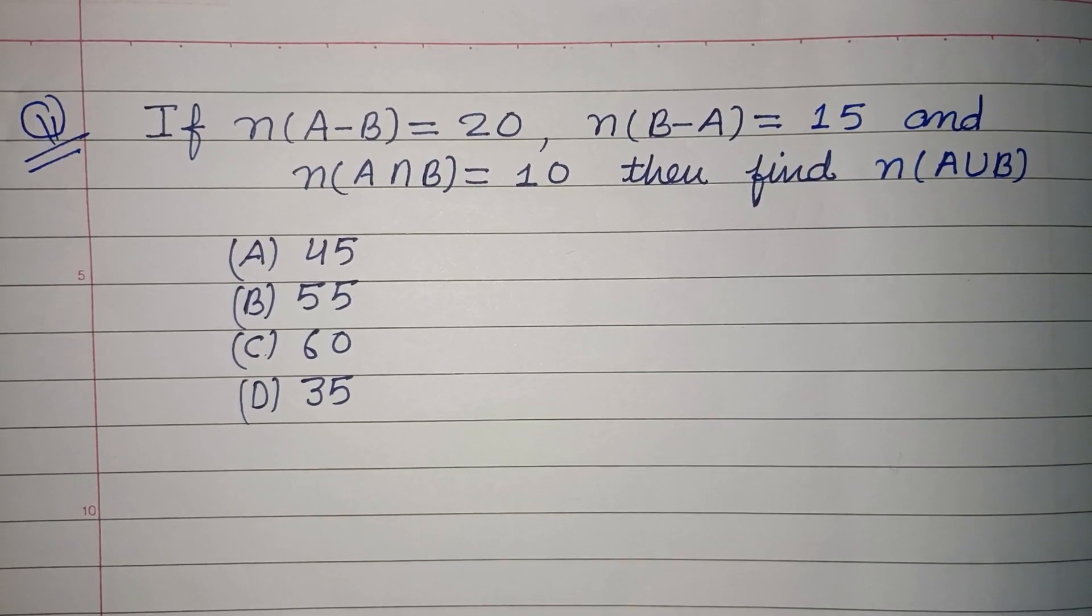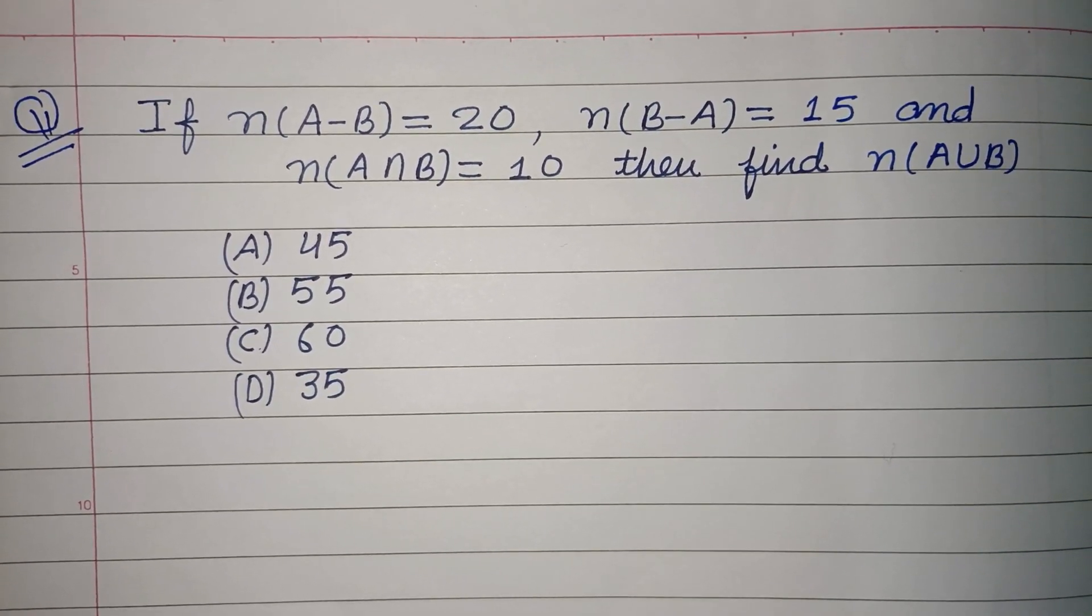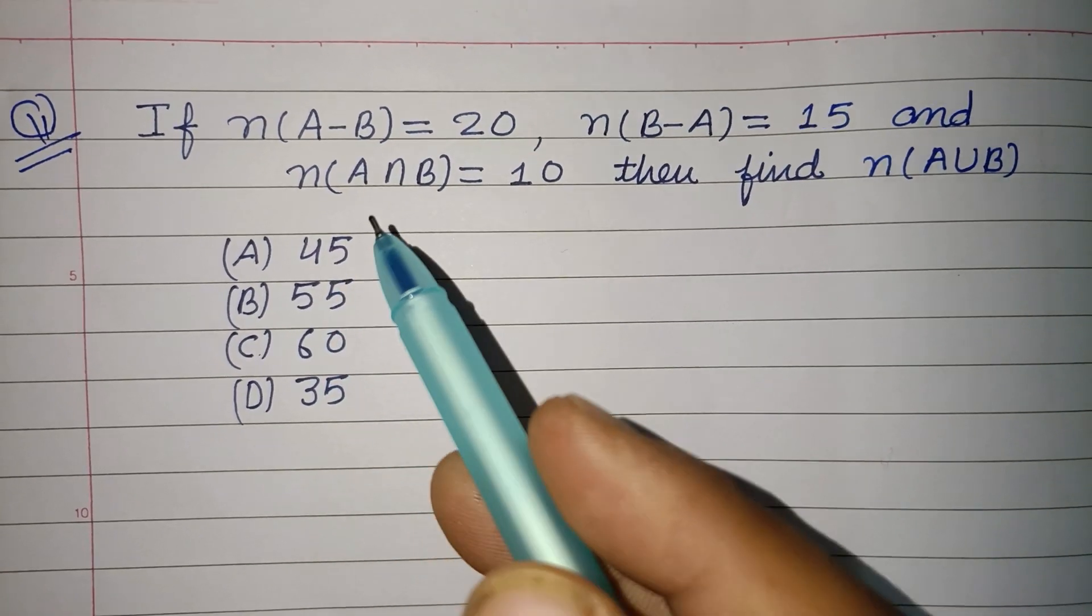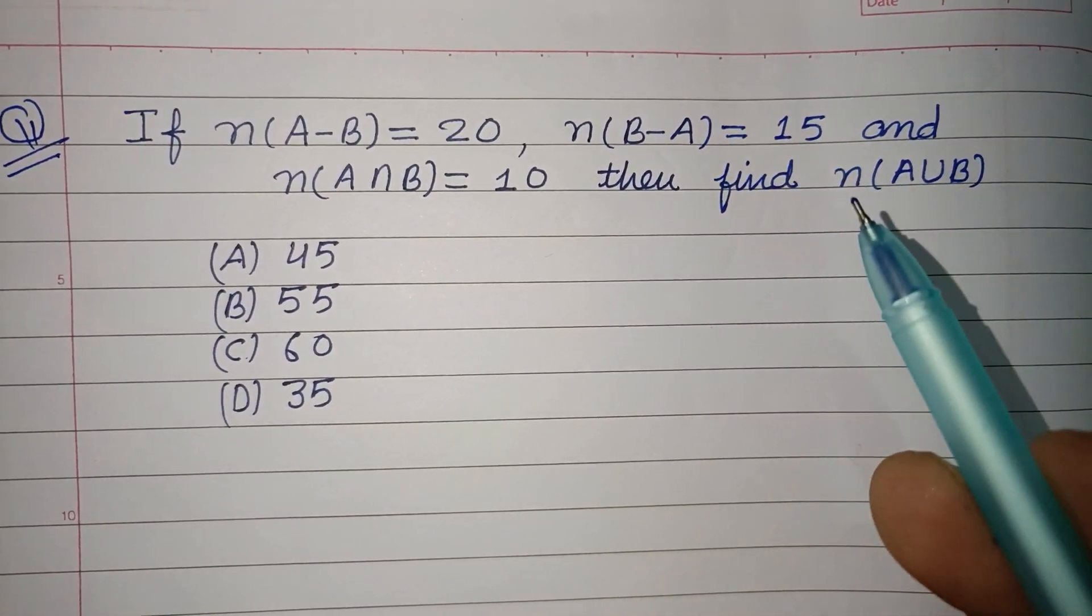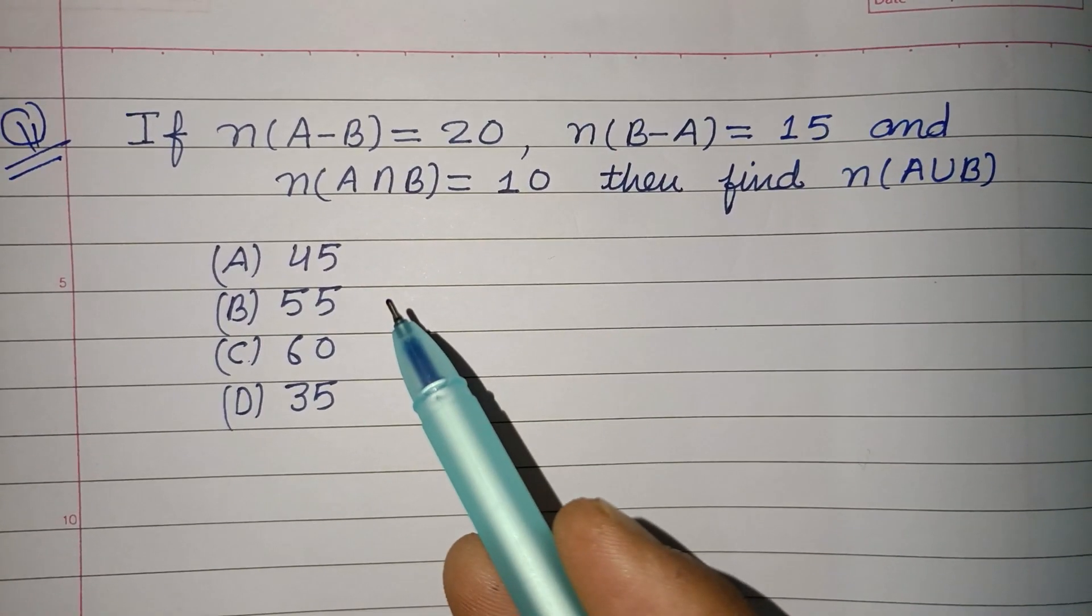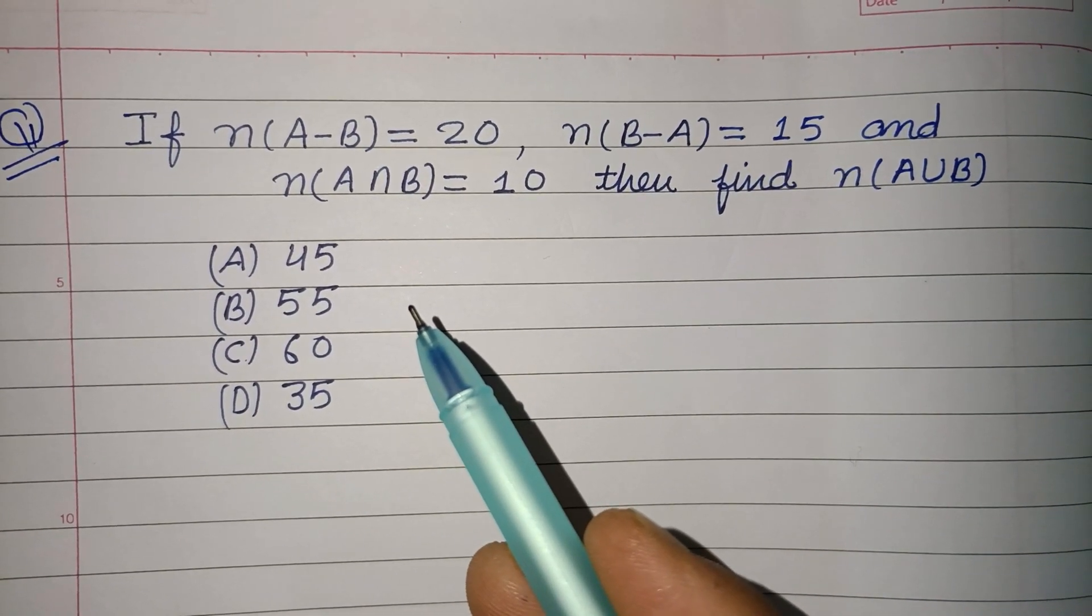Hello viewers, warm welcome to this YouTube channel. This is a question from set theory: If n(A-B) = 20, n(B-A) = 15, and n(A∩B) = 10, then find the value of n(A∪B).